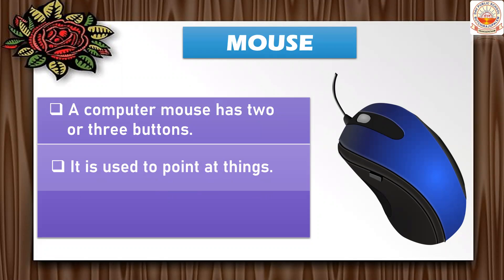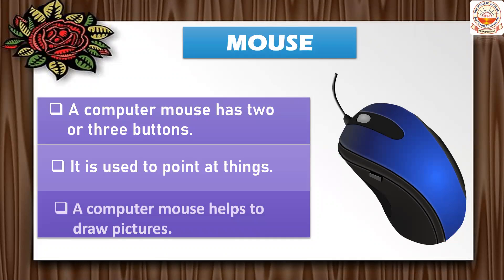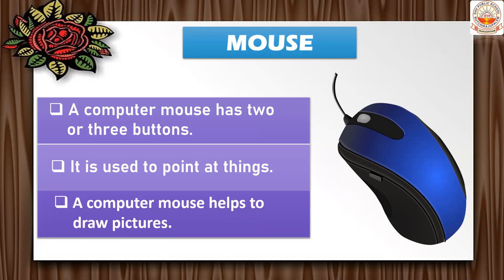We point at things with our finger. In the same way, a computer mouse is used to point at things shown on the monitor. The monitor will have many things, and those things can be pointed to using a mouse. A computer mouse also helps us to draw pictures.